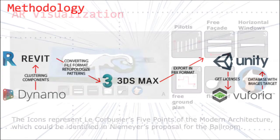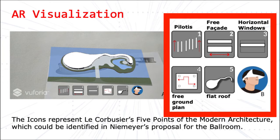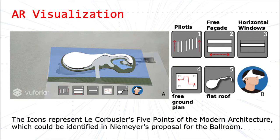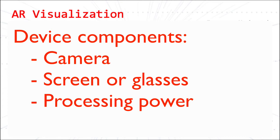The AR visualization features five buttons representing Le Corbusier's five points of modern architecture, identifiable in Niemeyer's proposal for the ballroom. Augmented reality overlays digital content on real-world objects seen through a regular camera, enriching our view of surroundings. AR needs a device with at least three components: a camera to provide real-world input; a screen or glass so the user can see the real world enhanced by computer-generated information; and enough processing power to retrieve features from the real world using computer vision.